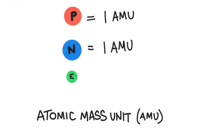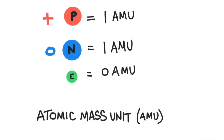Protons and neutrons are quite large compared to the electron. The electron is so small, in fact, that it has a mass of 0 amu. Protons have a positive charge, neutrons have no charge, and an electron has a negative charge.